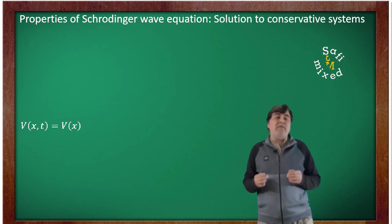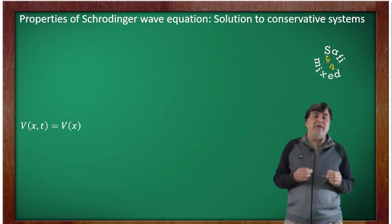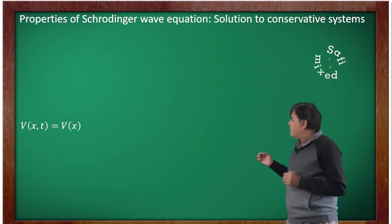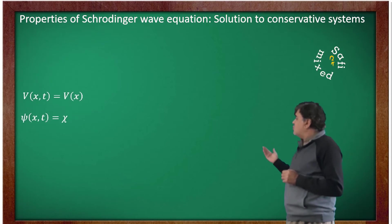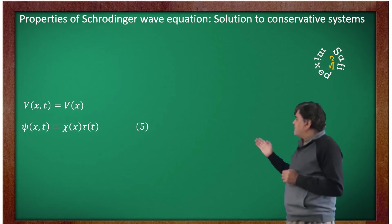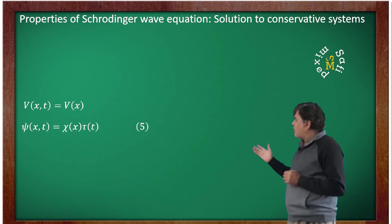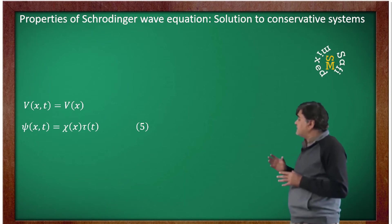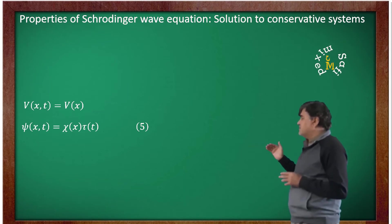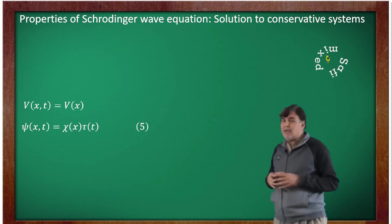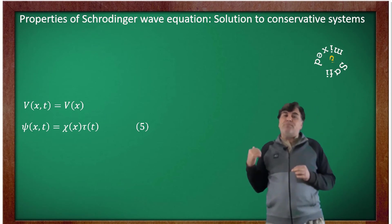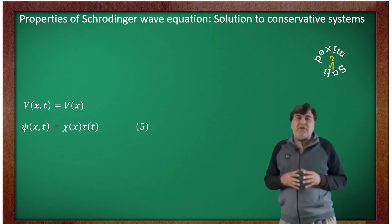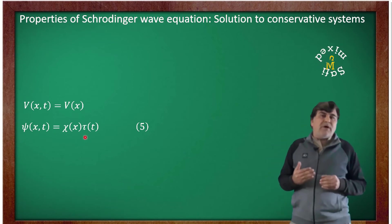This means the wave function can be written as a product of two wave functions: one position dependent and the other time dependent. That is, ψ(x,t) equals χ(x) multiplied with τ(t), where χ is a function of position only and τ is a function of time only. This form can be written only if the potential is time independent.